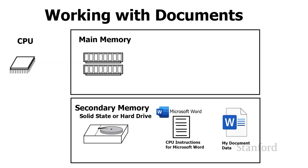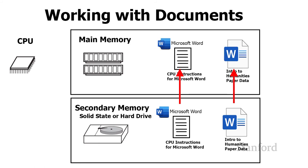As for documents — say I open a Microsoft Word document — when I'm not accessing them directly from a program, they sit in secondary memory because I want to keep my paper even after the computer turns off. When I start editing, the CPU cannot access things directly from secondary memory, so all the contents get copied into main memory. When I'm manipulating the document it's in main memory, and when I save it, it copies everything from main memory back into secondary storage.